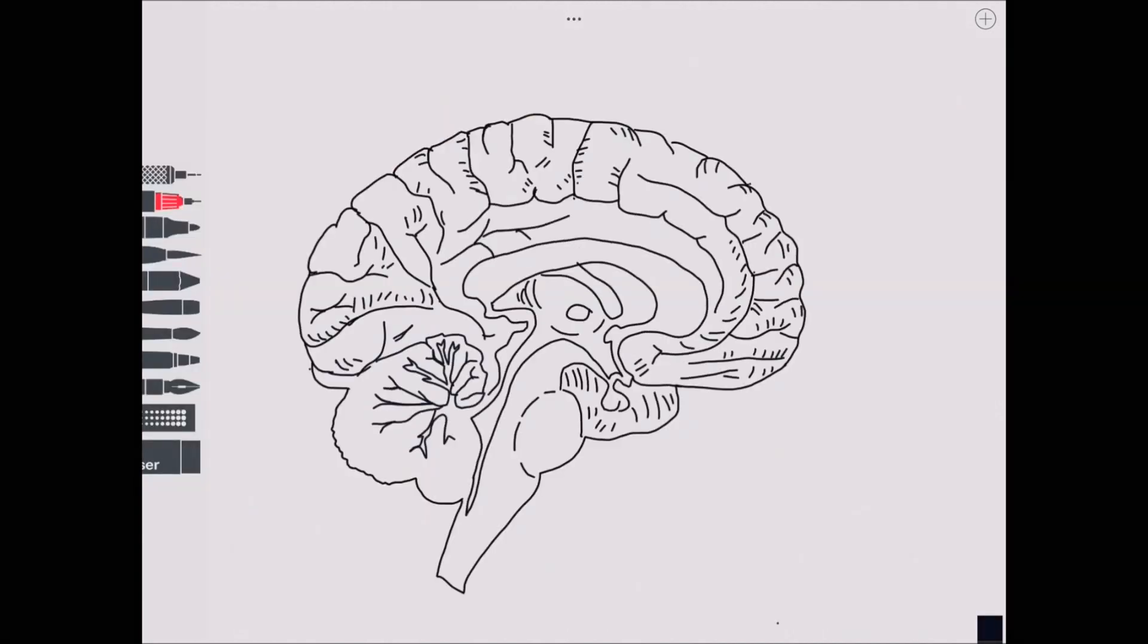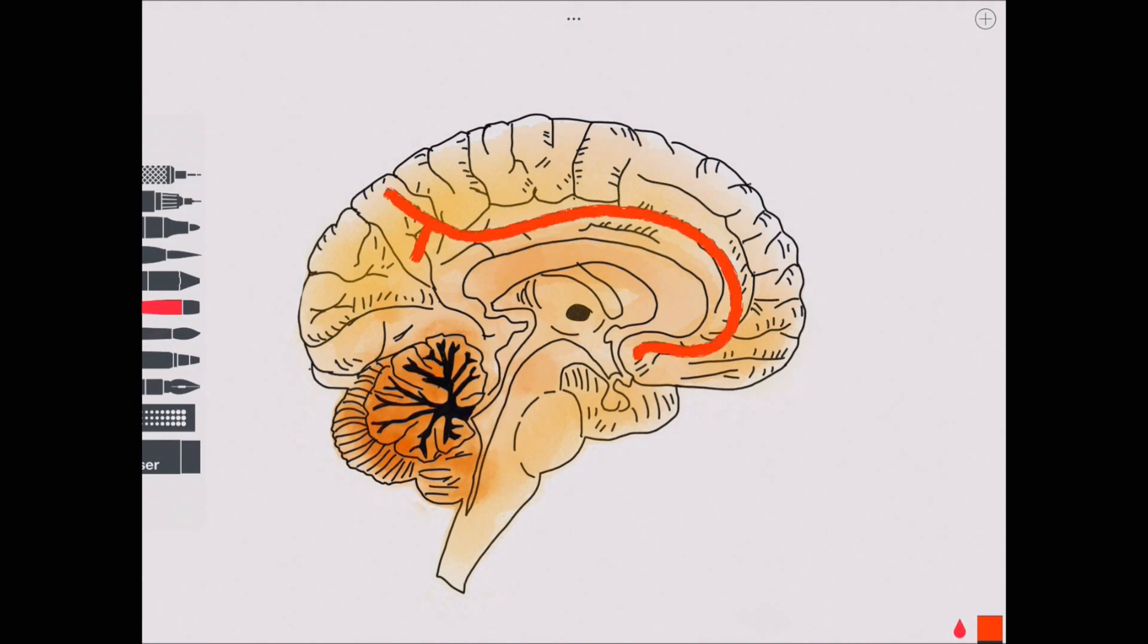If we then look at a mid-sagittal view, we can follow the artery further. It begins by travelling anteriorly and superiorly, before continuing backwards, immediately superior to the corpus callosum, giving off several branches as it does so.